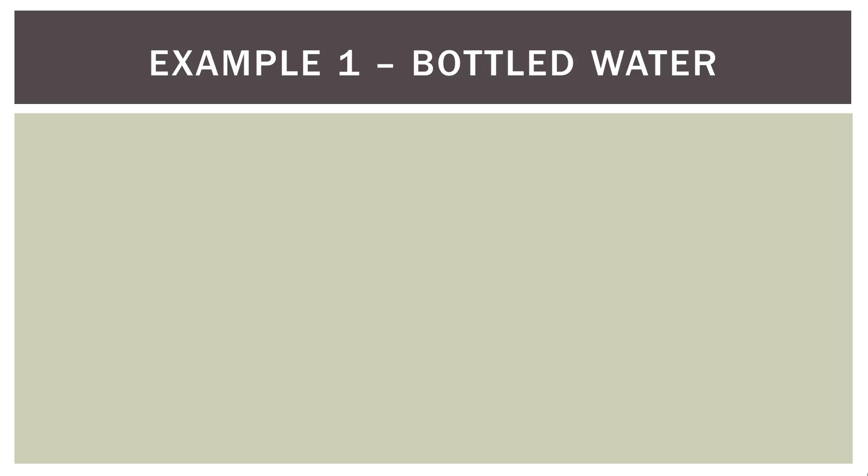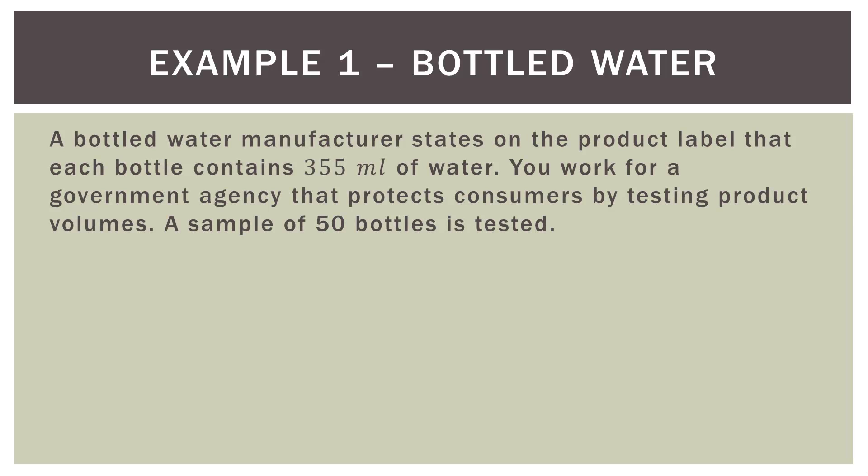Let's look at our water bottle example again. A bottled water manufacturer states on the product label that each bottle contains 355 milliliters of water. You work for a government agency that protects consumers by testing product volumes, measuring the volume actually stated on the label to make sure it is true.